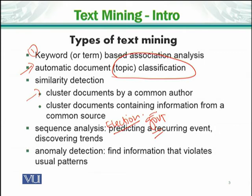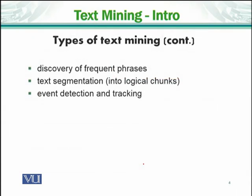Anomaly detection is another type. For instance, we may have predicted that a certain party would win an election, but when the actual result comes, it is reversed. We identify such anomalies and outliers to improve our predictions. Additional text mining types include discovering frequent phrases, text segmentation, and event detection and tracking. This list continues to grow.